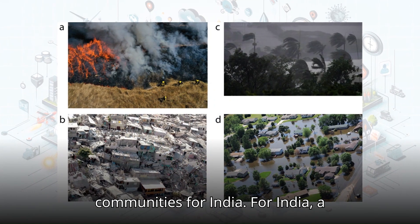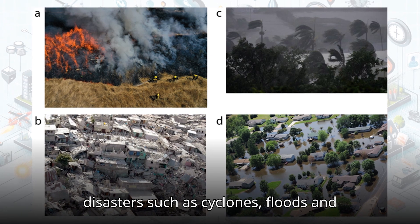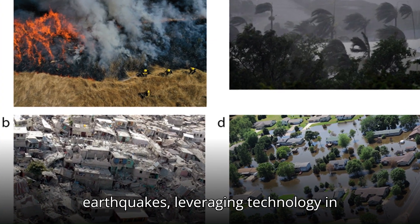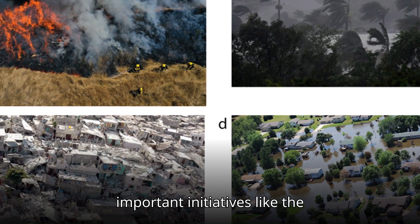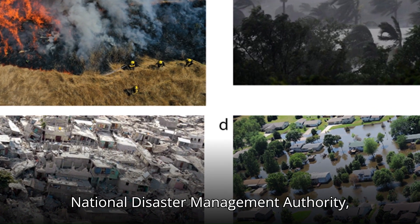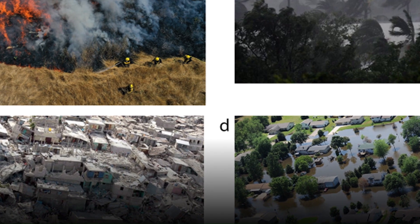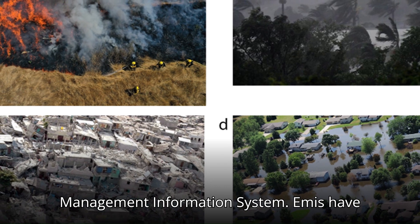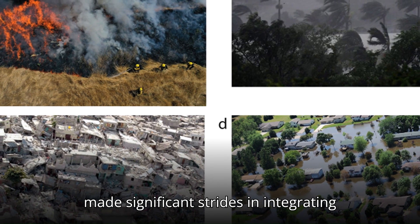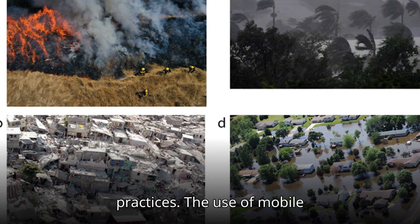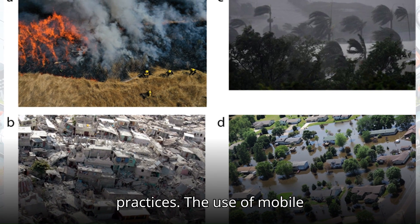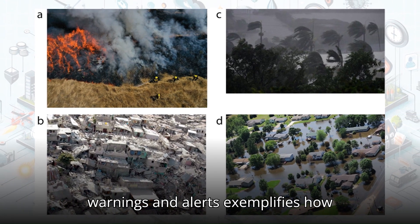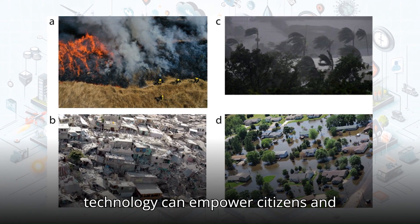For India, a country frequently affected by natural disasters such as cyclones, floods and earthquakes, leveraging technology in disaster management is particularly important. Initiatives like the National Disaster Management Authority (NDMA) and programs such as the Disaster Management Information System (DMIS) have made significant strides in integrating technology into disaster management practices. The use of mobile apps like the NDMA app for early warnings and alerts exemplifies how technology can empower citizens and enhance preparedness.